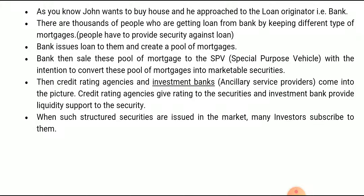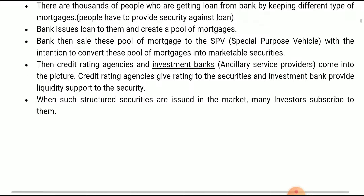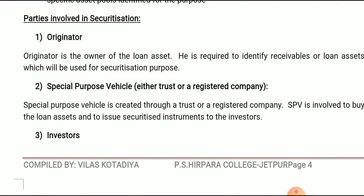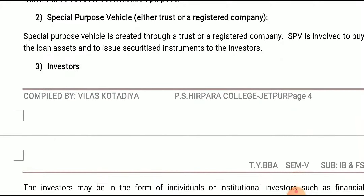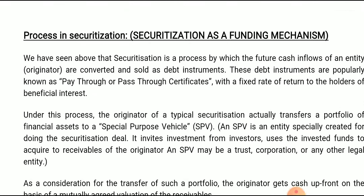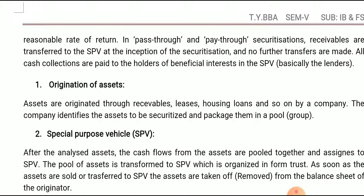The SPV also hires a credit rating agency, which provides a grade to the particular instrument. On the basis of this grade, investors can take a decision whether to make an investment. This is the securitization structure. Parties involved: originator (the bank), Special Purpose Vehicle (a financial institution that converts illiquid assets into liquid assets), investors, rating agency, and obligors.